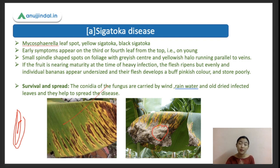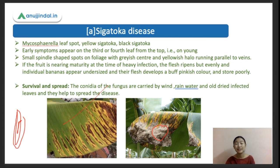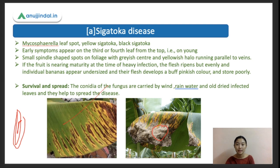The conidia of this fungus are carried by wind, rainwater, and old dry infected leaves, and they help to spread the disease. So wind, rainwater, and old dry infected leaves are the mode of spread for this infection.